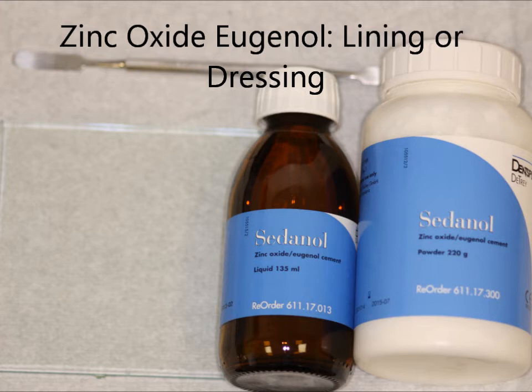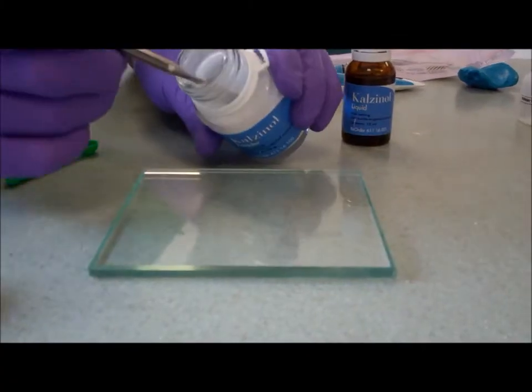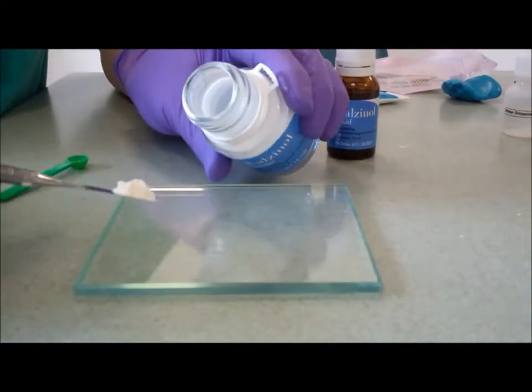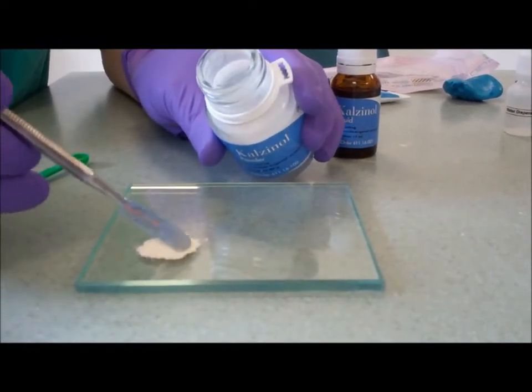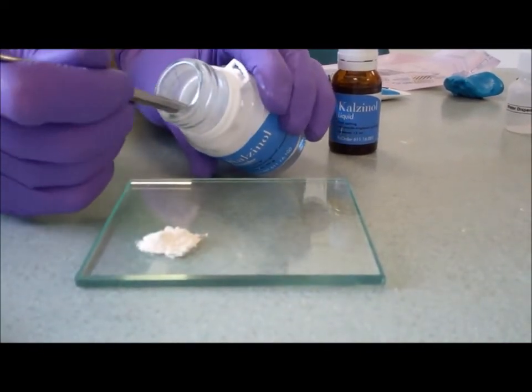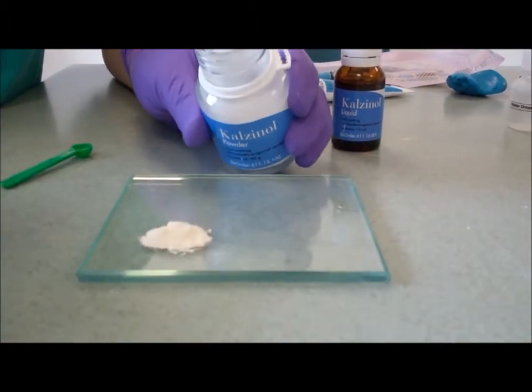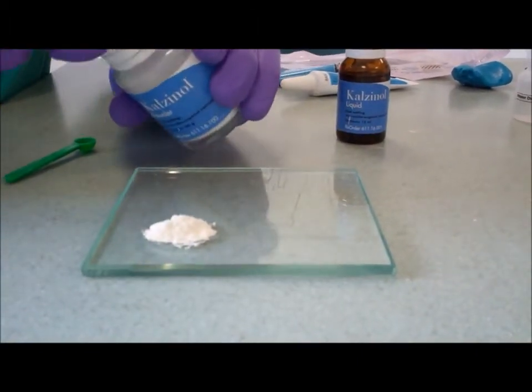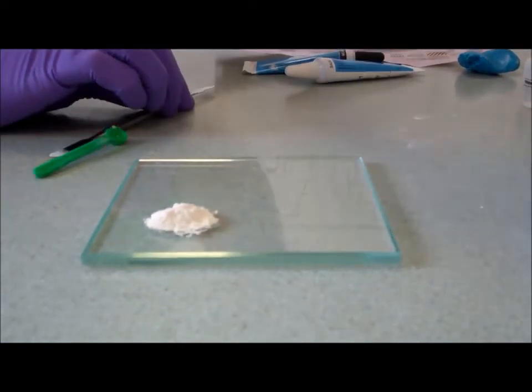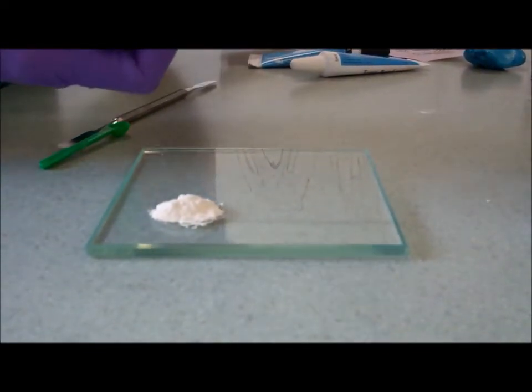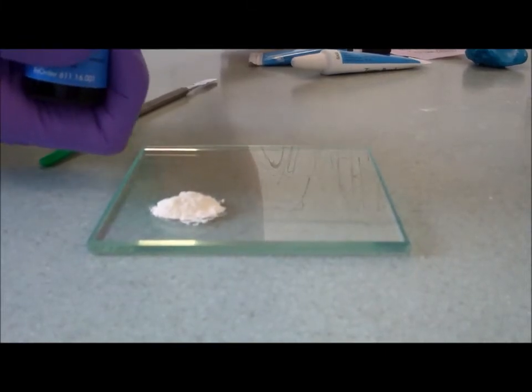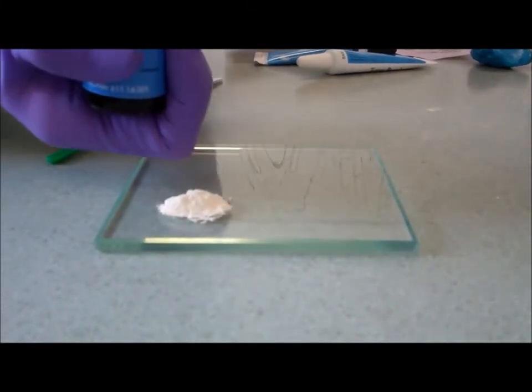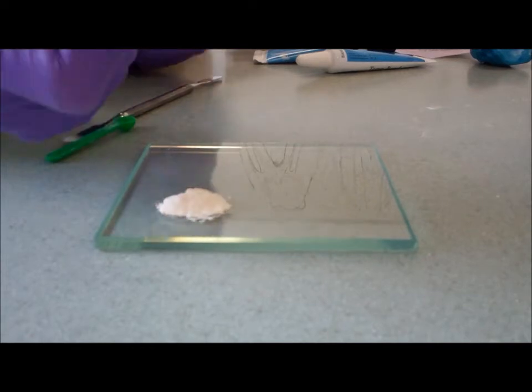Zinc oxide eugenol cement can be used as a dressing or a lining, again in similar consistencies. So put out a suitable amount of the powder. Now the end amount of material that you're left with is really dictated by the liquid with zinc oxide eugenol, and you often need more than you think. Also it's not a plastic bottle, it's a glass bottle.